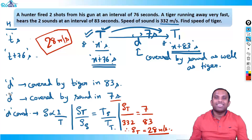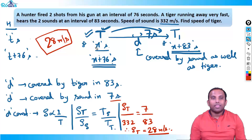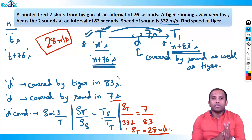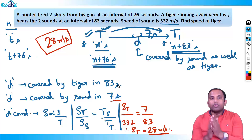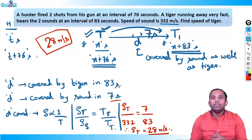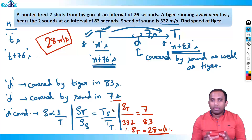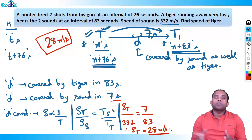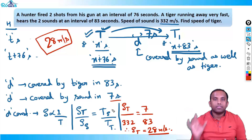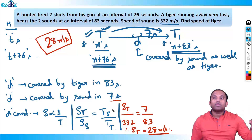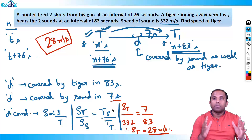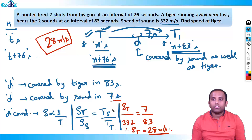Both problems use the same concept: find a particular distance covered by both entities, then compare their speeds. For father and daughter, it was the distance the daughter walked. For sound and tiger, it was the distance d covered by both. The key is to identify the common distance to compare speeds.